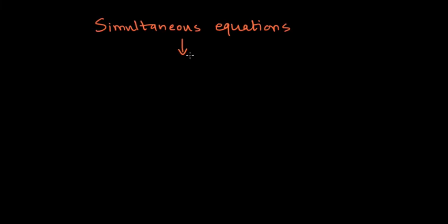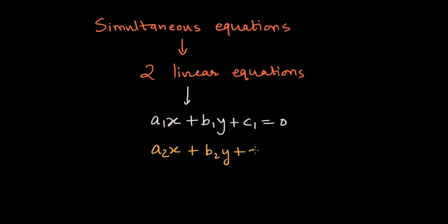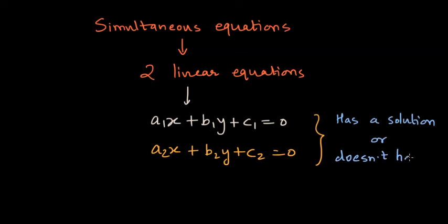When we learn about simultaneous equations, we are basically looking at two linear equations for which we need to find out the solution. Such linear equations look like this: a1x plus b1y plus c1 is equal to 0, and a2x plus b2y plus c2 is equal to 0. Now we are going to learn how to identify whether the given linear equations have a solution or don't have a solution.